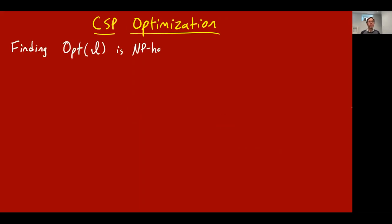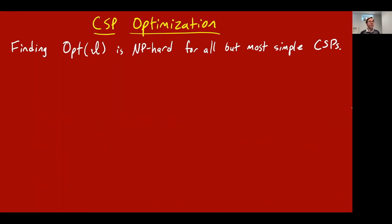Let me move on now to talking about CSP optimization, which is the second task. In contrast to CSP satisfiability, if I ask you to find the optimum assignment — the one that satisfies the most constraints, even if that's not 100% of the constraints — this is really hard. It's NP-hard for all but the most simple CSPs.